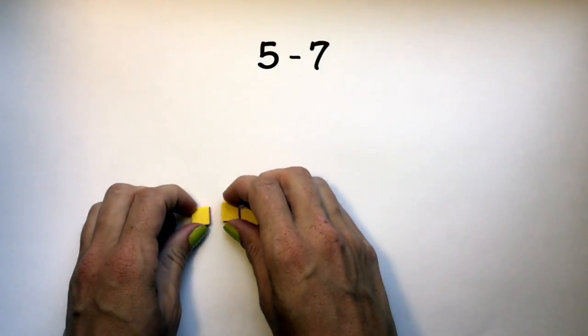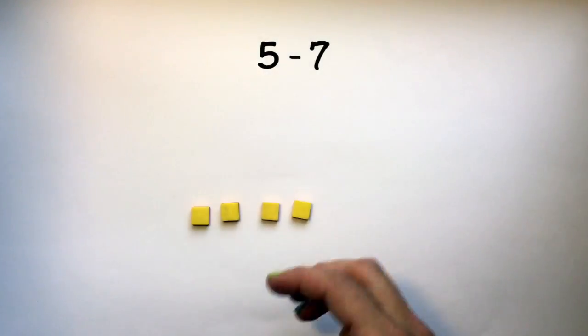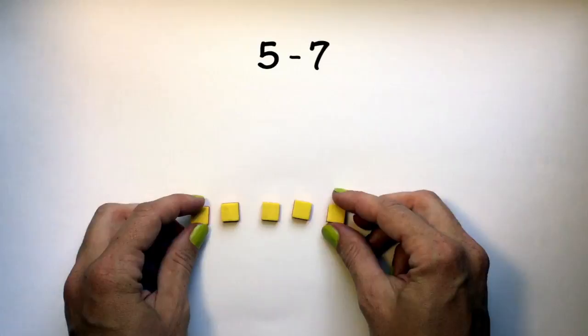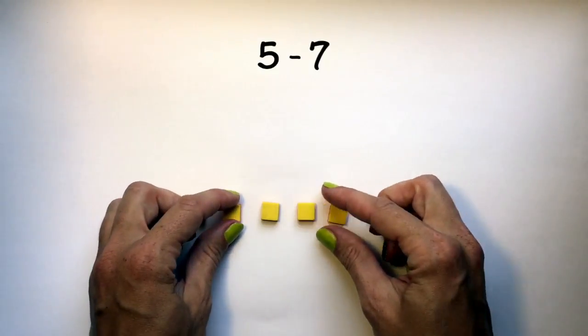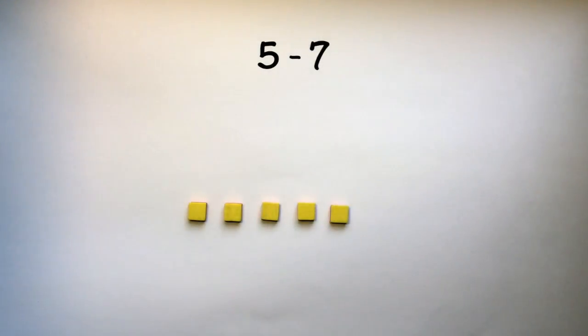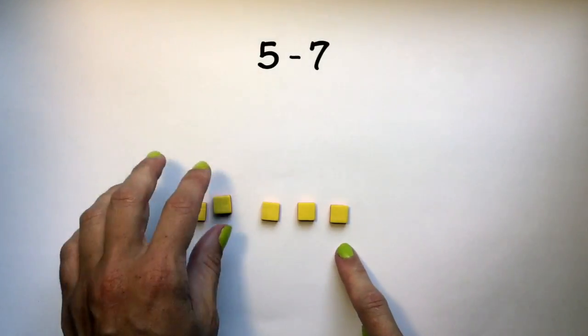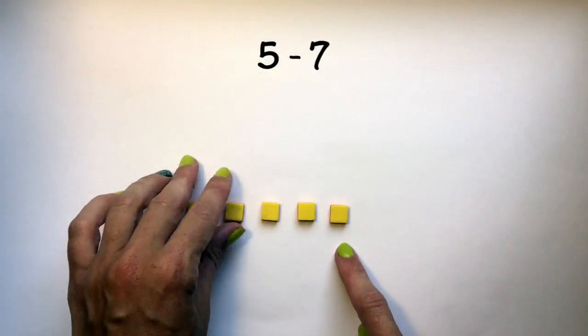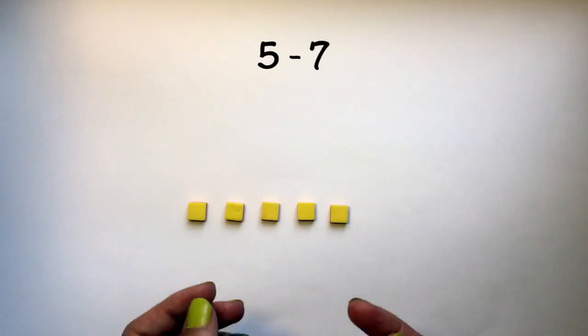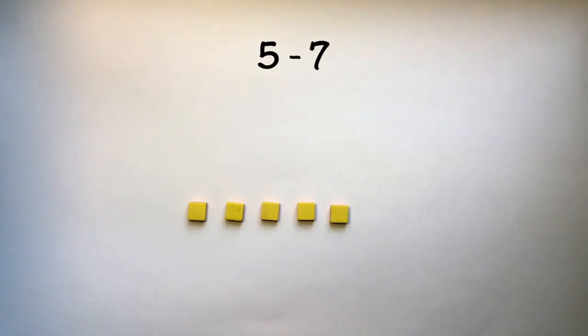The second subtraction problem you tried was 5 minus 7. Using our zero pairs method we display five positive integer tiles. This is showing us positive 5. Now we need to take away positive 7 and we don't have enough tiles.